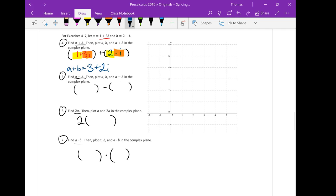So let's plot. It says then plot a, b, and a plus b in the complex plane. a is 1 plus 3i, right there. Notice this plane didn't have i's on it, but we can just treat it as i's.